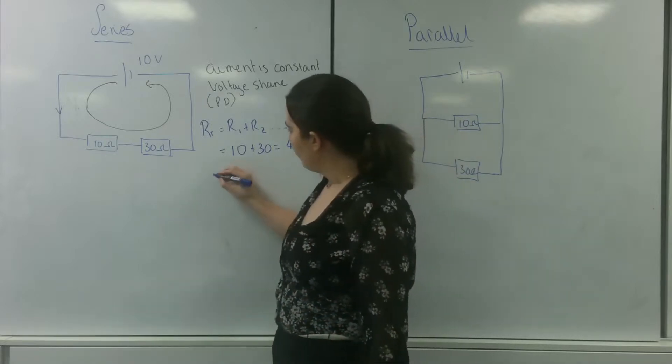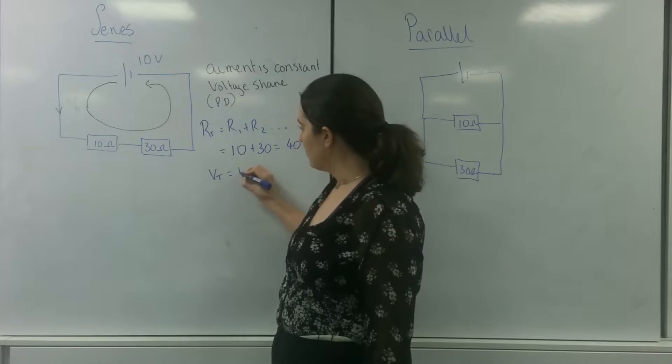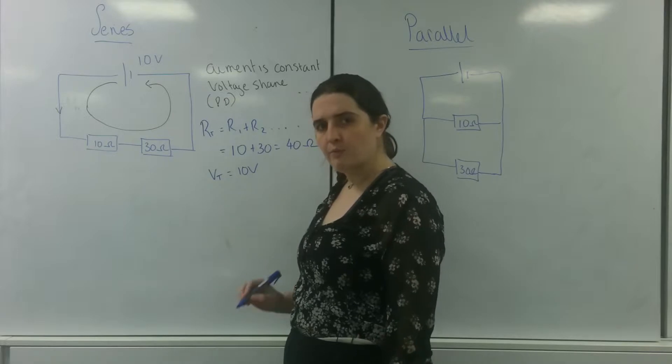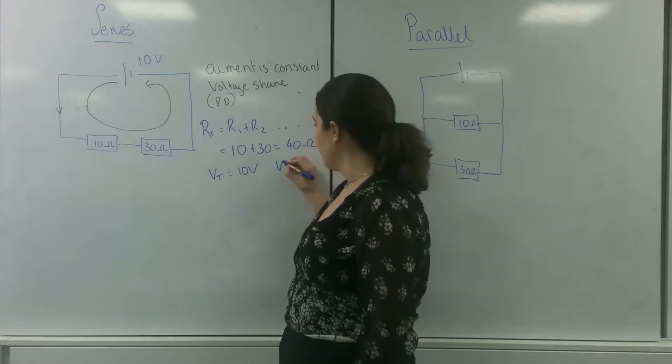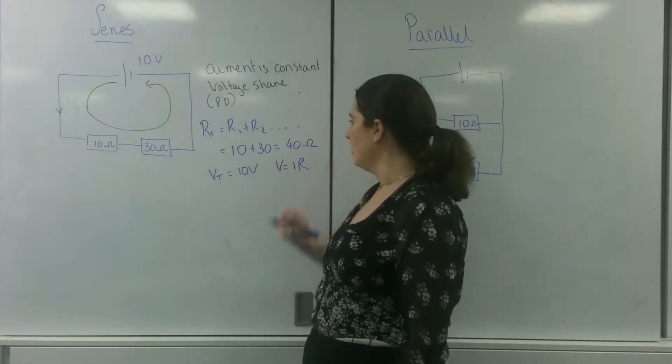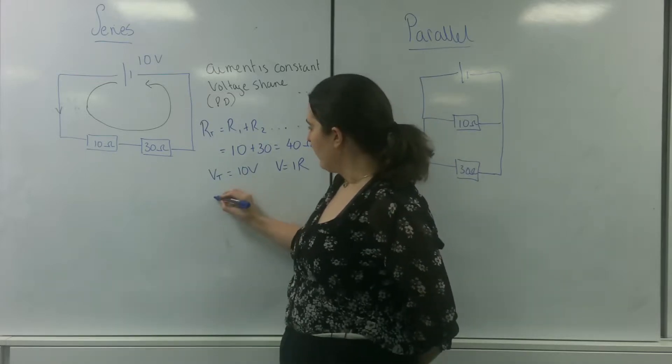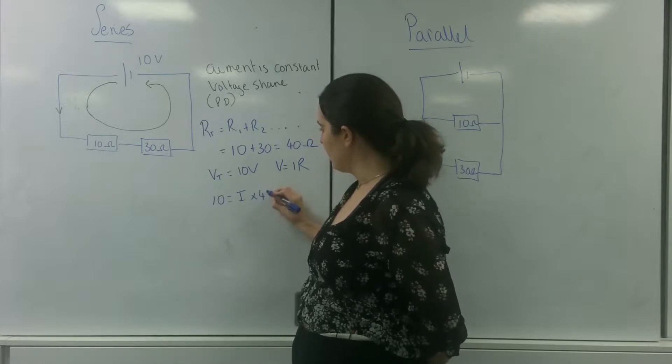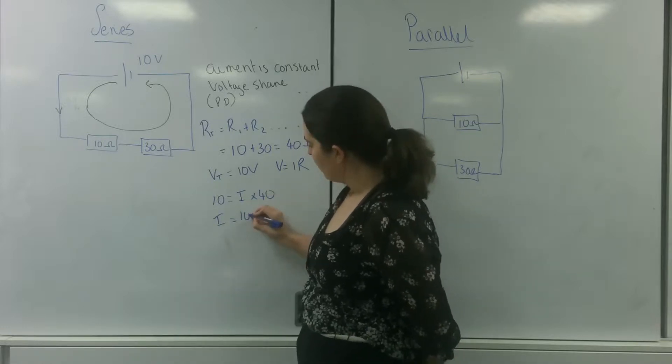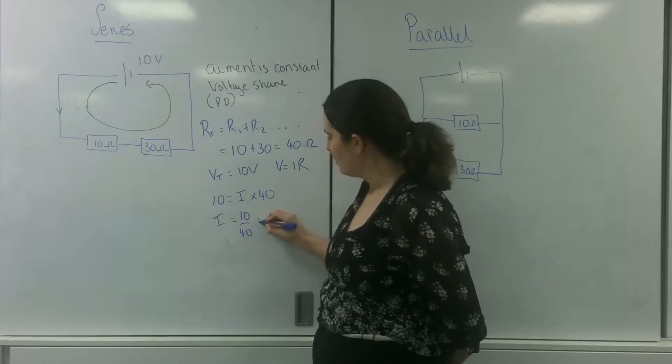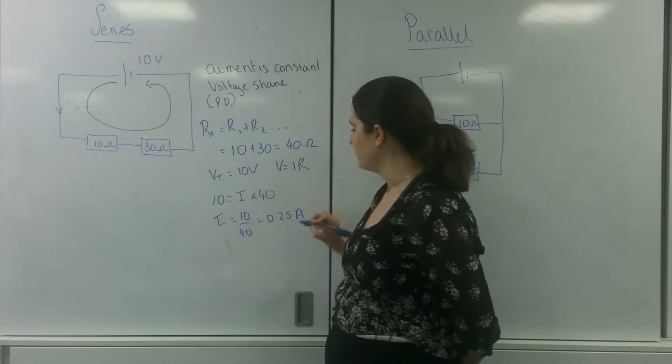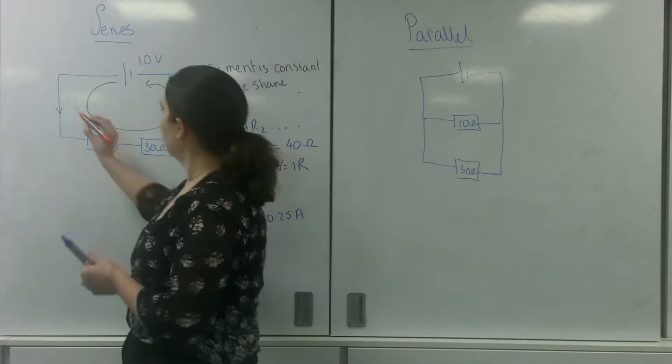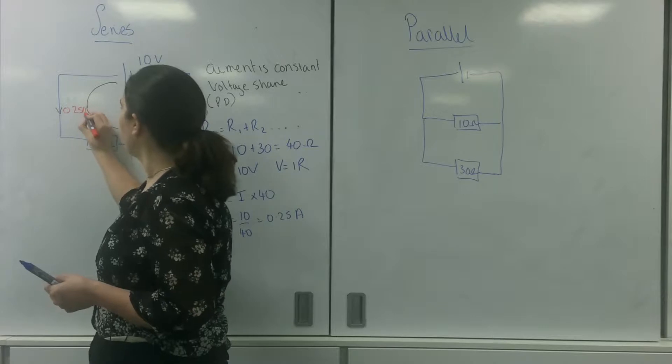I know that my total voltage is 10 volts. So using Ohm's law of V equals IR, I know that 10 equals I times 40. So I equals 10 over 40 which is 0.25 amps. So I know in this circuit there is 0.25 amps.